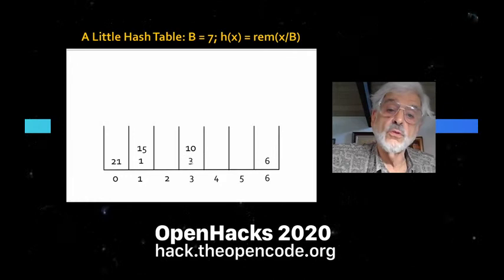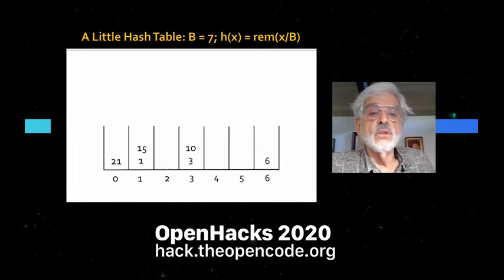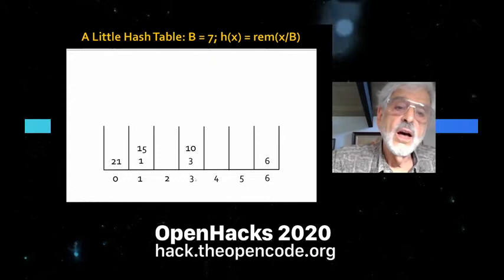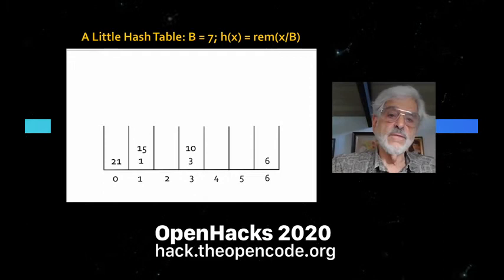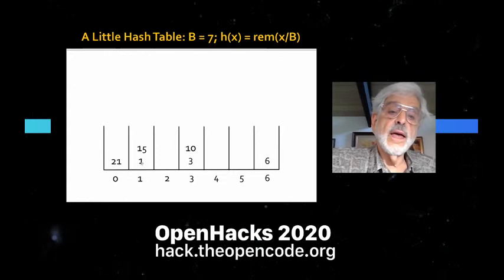You can see there's some clustering — it's not completely even. In general you can't make it perfectly even, but the more items you throw in, the closer to average each bucket becomes. For example, to look up the number 15, I hash 15, find it would go in bucket 1, look at the short linked list there, and find it quickly. That's how hashing works.